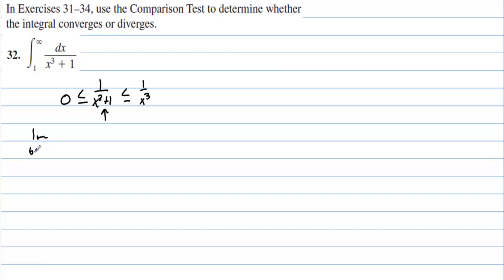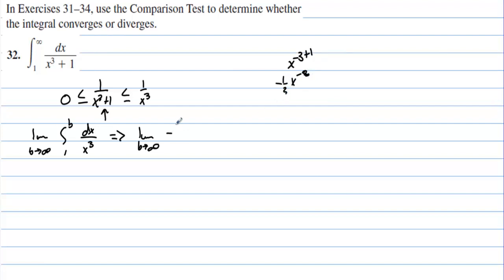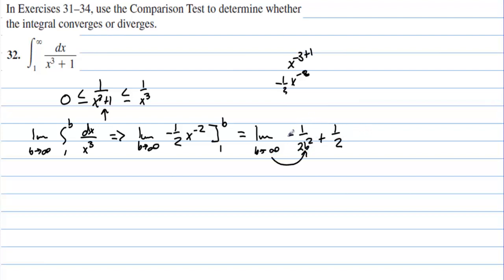We take the limit as b approaches infinity of the integral from 1 to b of dx over x cubed. Integrating x to the negative 3, we add 1 to get x to the negative 2, times negative 1 half. So we get negative 1 half x to the negative 2, evaluated from 1 to b. That's the limit as b approaches infinity of (negative 1 over 2b squared plus 1 half). As b goes to infinity, the first term goes to 0 and we get 1 half. So this integral converges as well.